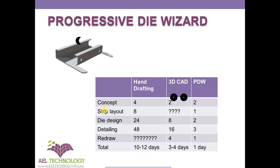He has to always refer to a catalog of die design — die base sellers — and it will take a minimum of 2 to 3 days to develop the design and do a proper section so that everyone else will understand the design. It will take 4 to 5 days to complete the entire detailing work of that particular die. And if you had to change the component or redraw it, god knows how long it will take. So generally it takes 10 to 12 days to hand draw this particular progressive die.